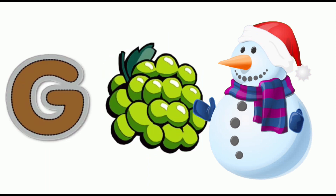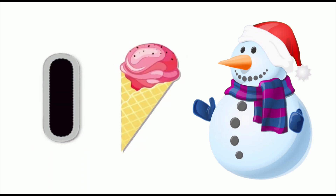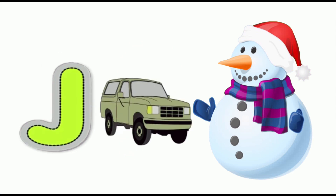G for grapes. H for hen. I for ice cream. J for jeep.